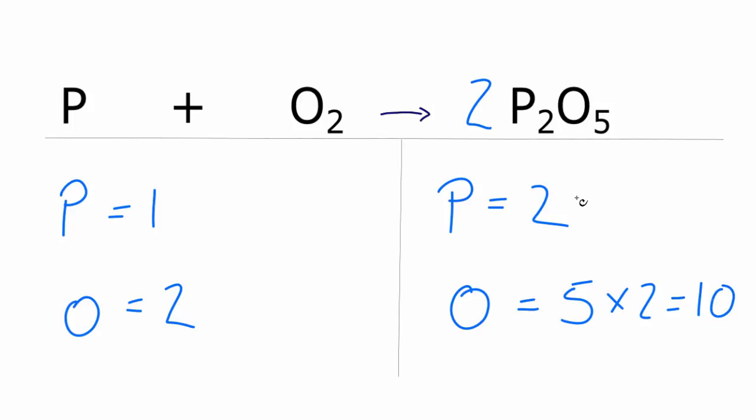And then two times two, that'll give me four. Now when I go over to the reactants, if I want to have ten oxygen atoms, I'll just put a coefficient of five in front of the O2. So two times five, that equals ten.